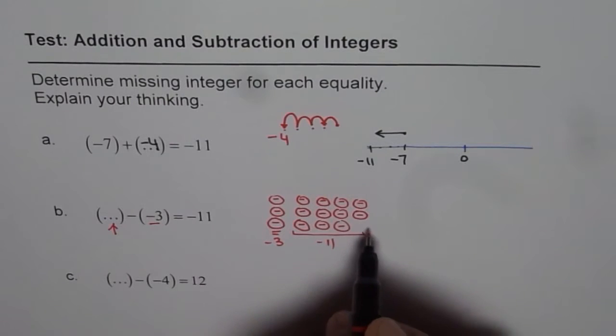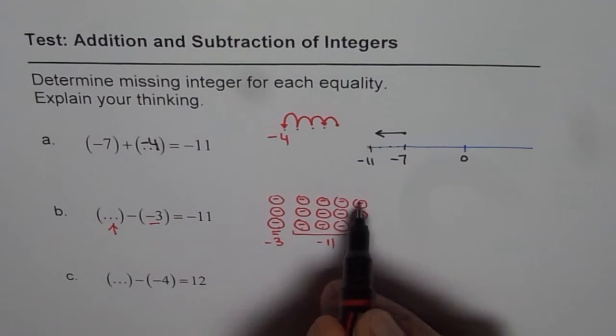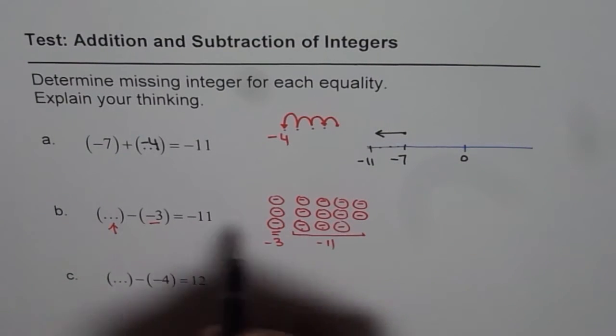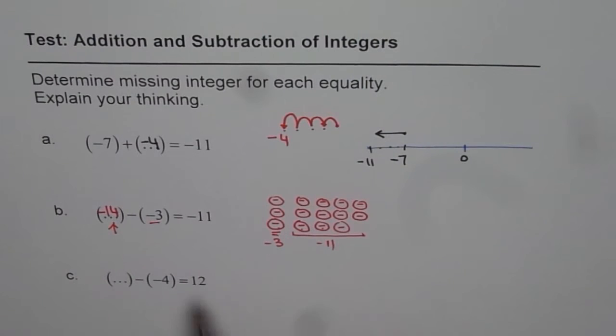What do you get? Count them. So, 1, 2, 3, 4 times 3 is 12, 13, and 1, 14. And all negatives. So, it is negative 14. So, that is how you can explain how you get your answer.